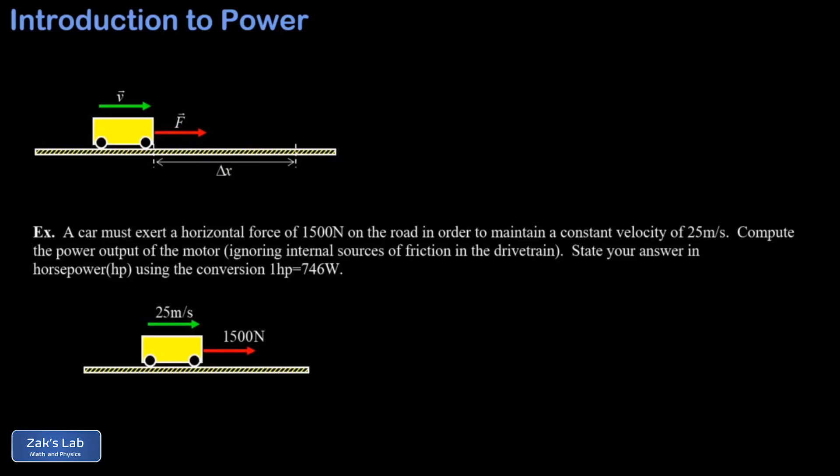For example, a car's motor has to do work to keep it moving at constant velocity because the motor has to counteract the drag force of the air, the rolling friction on the tires, and so on. In the picture at the top we have a car moving along with a constant velocity v, and it's taking a force F to get this done—to overcome all those external friction forces.